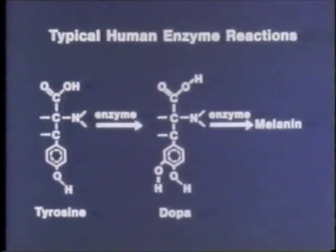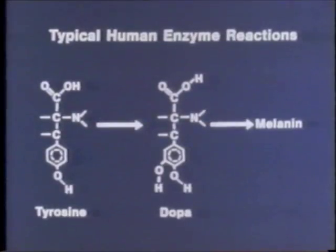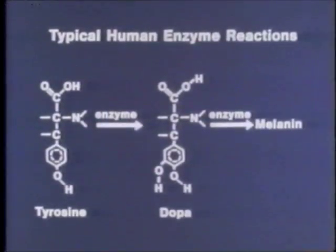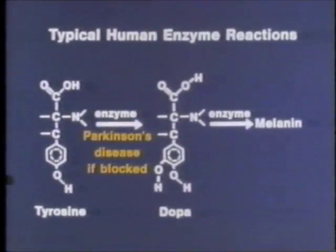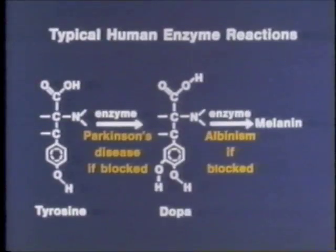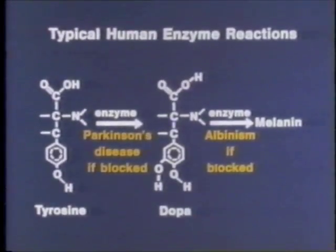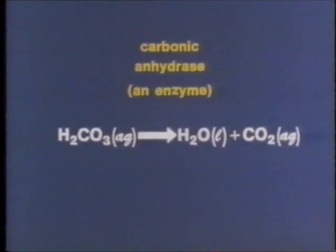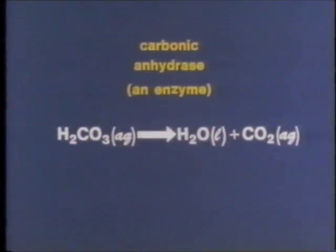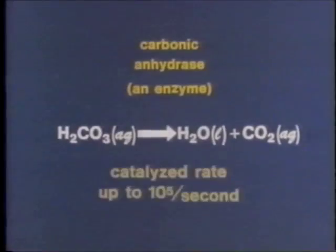The rates of these syntheses are controlled by well-defined molecules called enzymes. You have thousands of different enzymes in your body. If any one ceases to operate, you'll get sick. But when successful, a single molecule of an enzyme can accomplish as many as 100,000 syntheses per second.